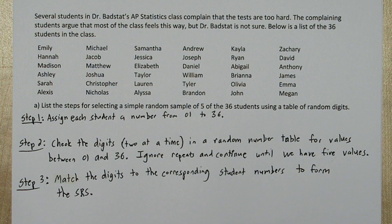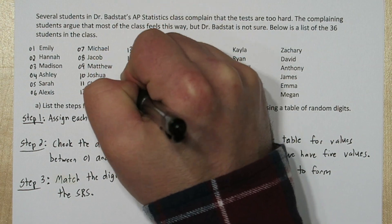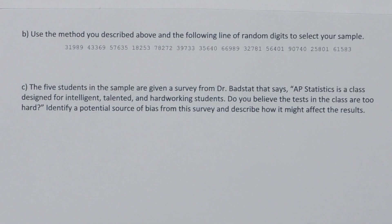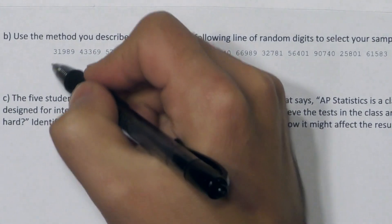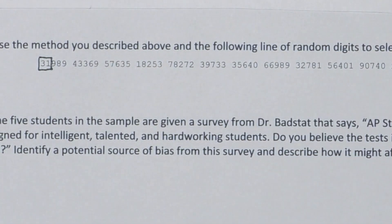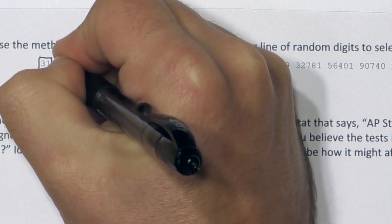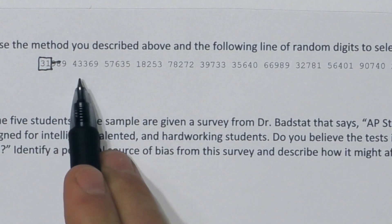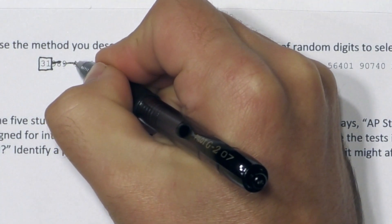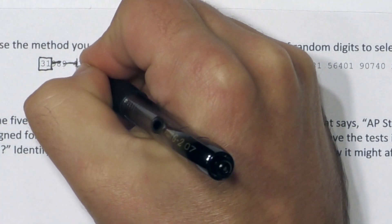Now we're going to use our method. First we need to assign all the students a number. Now we're ready to look through our table — we're going to look two digits at a time for numbers that are between 01 and 36. So let's start with these first two numbers: that's 31, so that's our first name we're going to select. The next two digits are 98, which exceed our interval, so we'll cross out 98. Then we have 94, which also exceeds our interval. Next we have 33 — we'll take that.